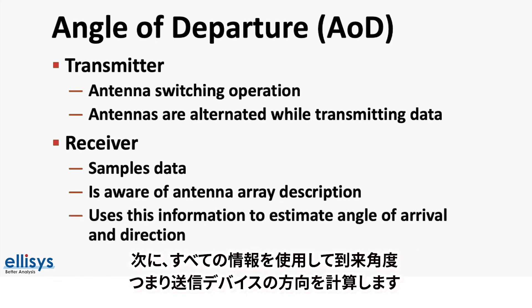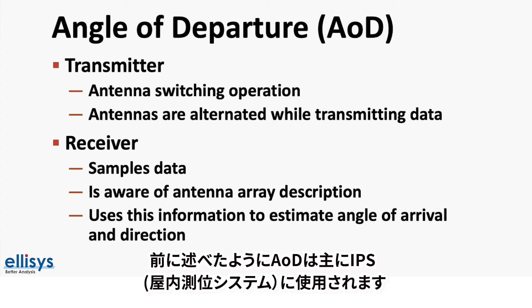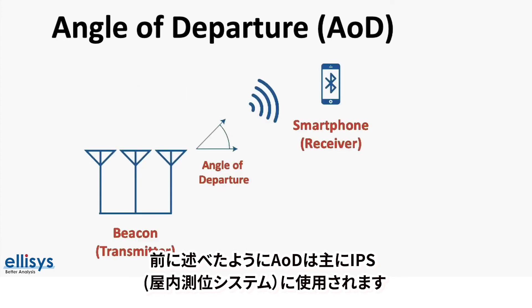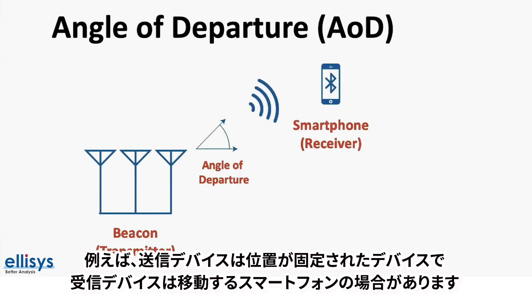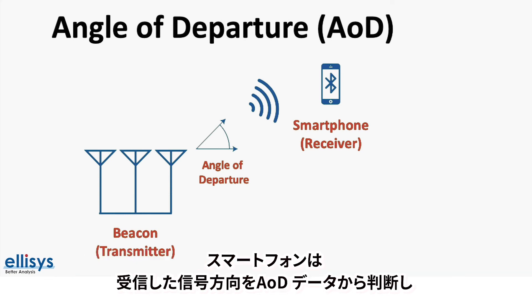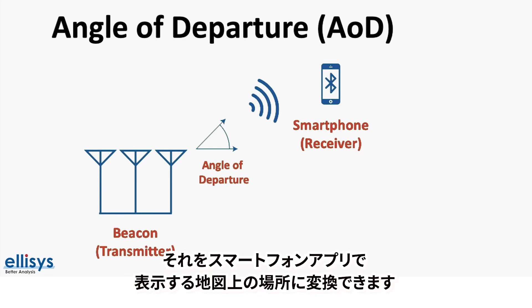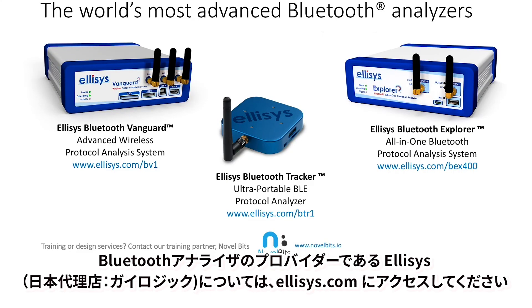The receiver uses all this information to calculate the angle of arrival and hence the direction of the transmitter. The angle of departure is primarily used for indoor positioning systems. For example, a transmitter could be a fixed locator device that sends a signal received by a smartphone. The smartphone can then determine the direction of the received signal from the angle of departure data and translate that to a location on a map displayed in a specific smartphone app.